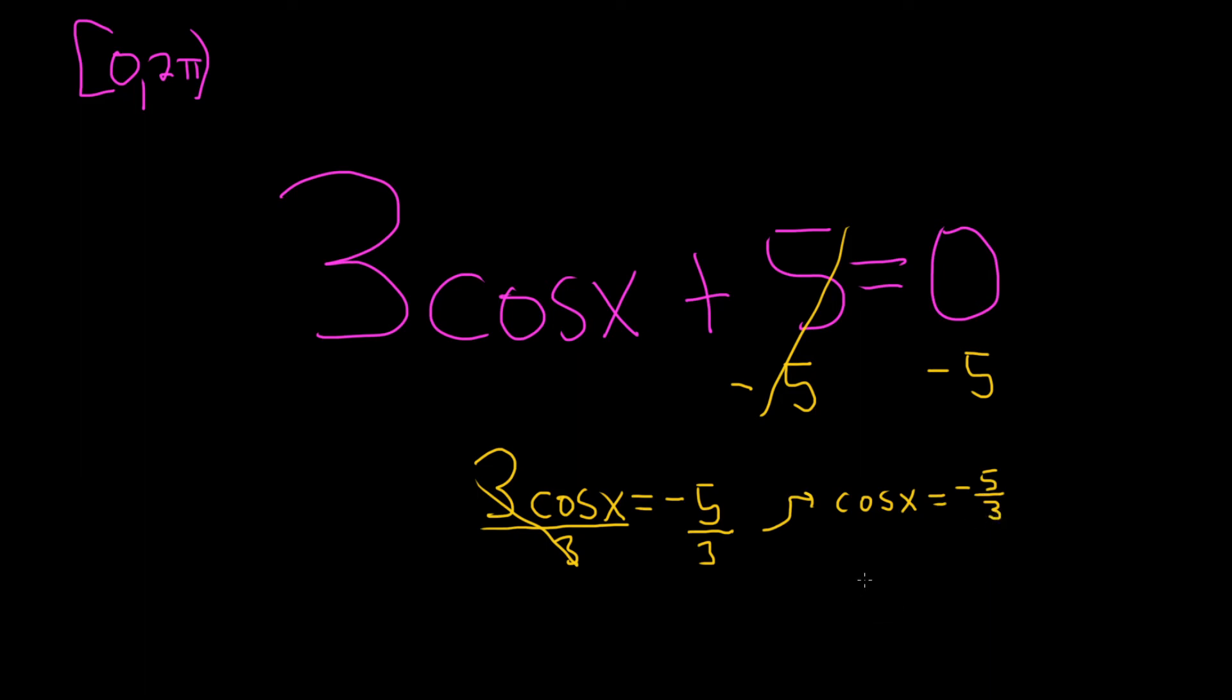And we're actually done. And the reason is this is a number smaller than negative 1. If you think about the graph of cosine, it looks something like this. It's a wave function. It's a pretty bad picture, but the biggest it can be is 1, and the smallest is negative 1. So this is a number smaller than negative 1.